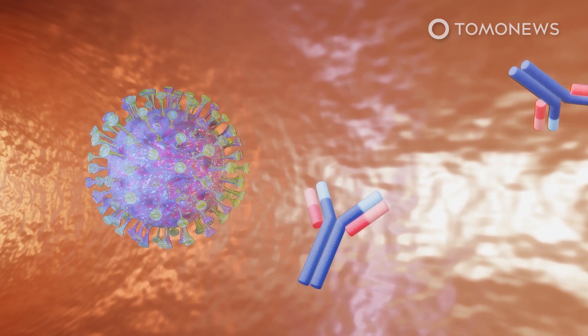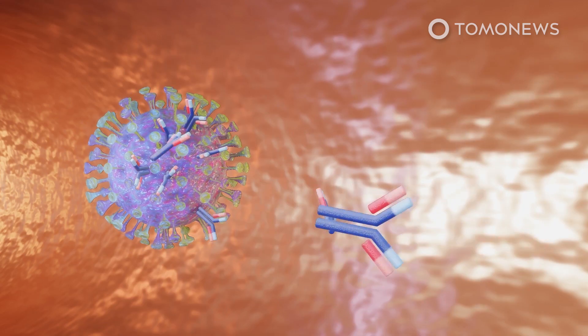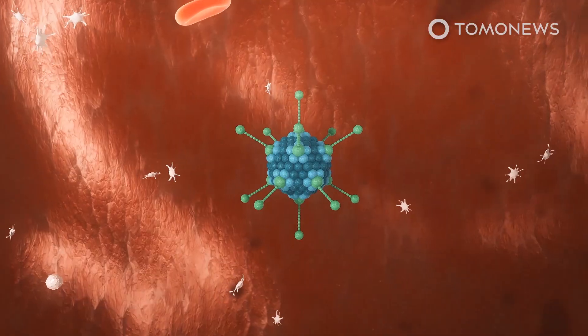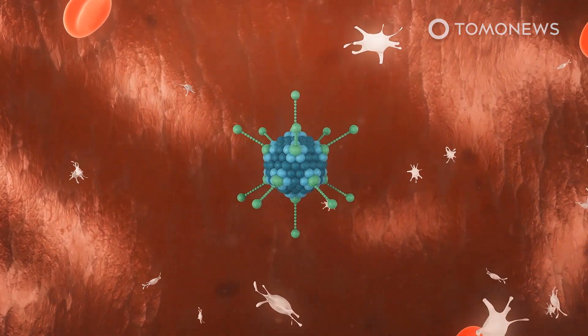This virus vector then helps program an immune response against a real coronavirus. The new study found that if the vaccine enters the bloodstream, it can attract a type of protein called platelet factor 4.